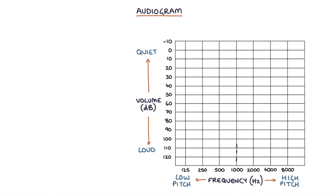For example, a 1000 hertz sound will be played at various volumes until the patient can just about hear the sound. If this tone is heard at 15 decibels, a mark is made on the chart where 1000 hertz meets 15 decibels. If this sound can only be heard at 80 decibels, a mark is made where 1000 hertz meets 80 decibels.